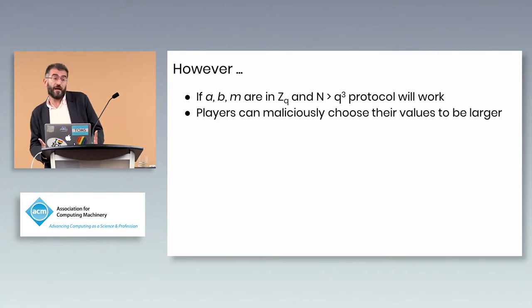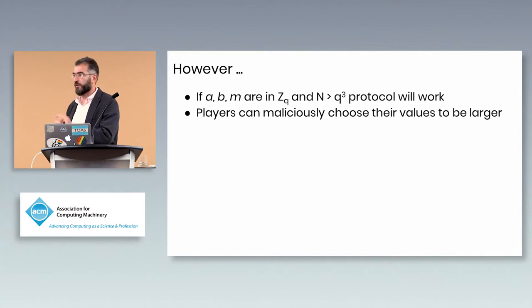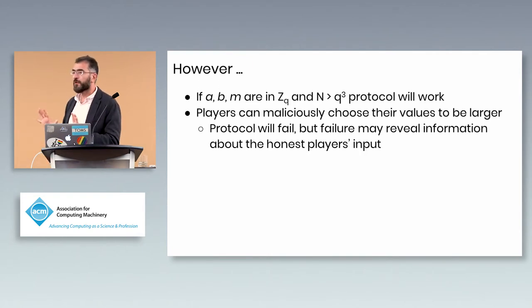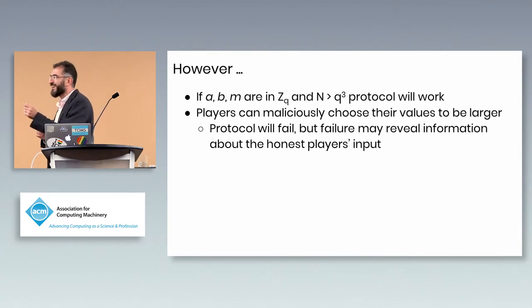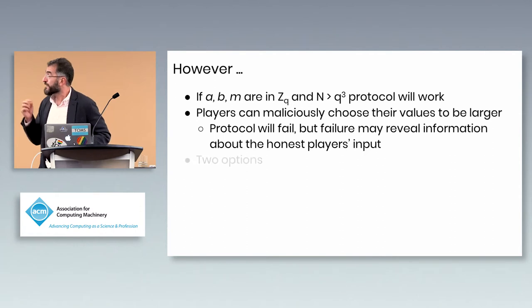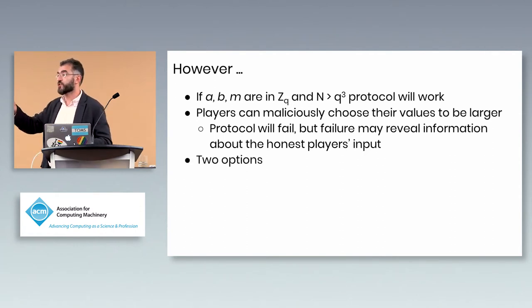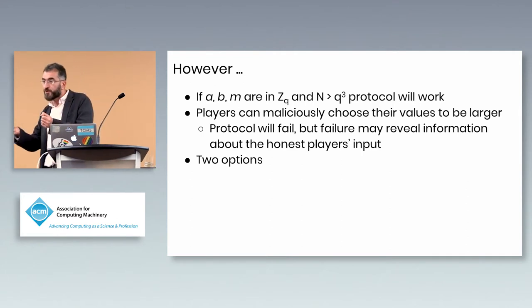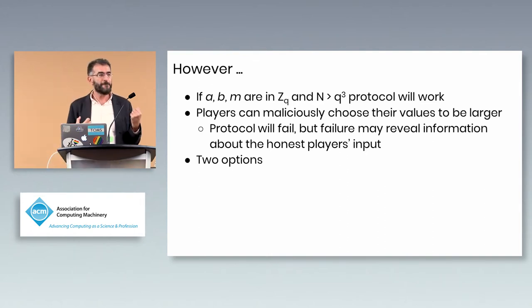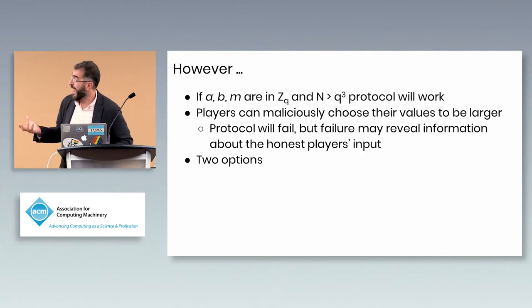If Alice or Bob inputs a number larger than their legitimate share, the protocol fails. Normally this isn't a huge issue — if the final signature fails verification, you abort and restart. But the failure pattern could be correlated with the honest players' secret inputs, so a malicious party injecting a failure may learn a limited amount of information about the secret key.